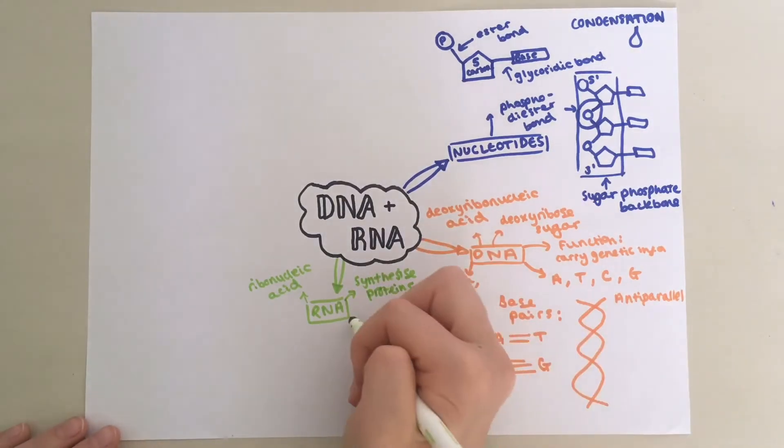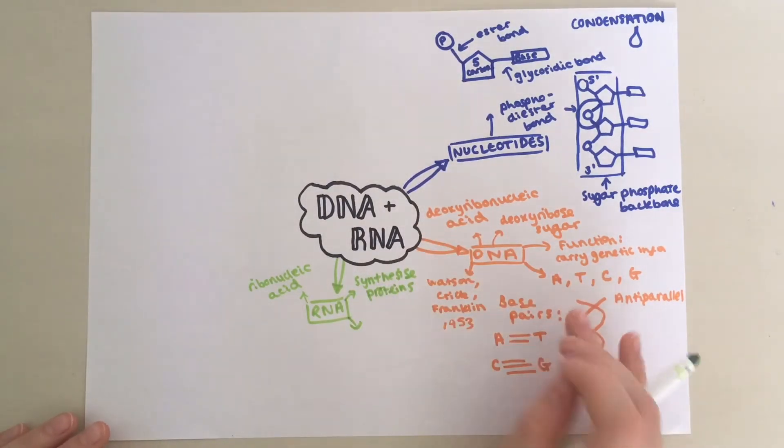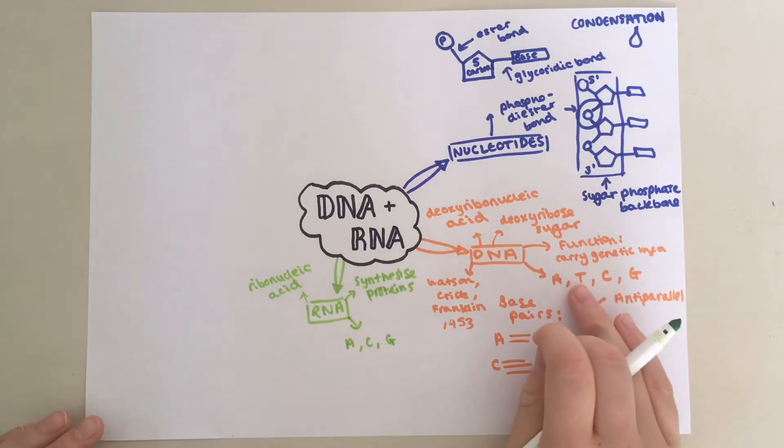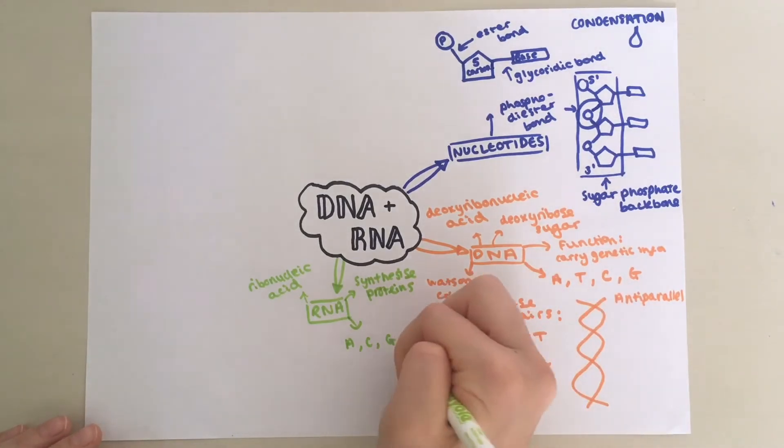The bases in RNA are very similar to that of DNA, however there is one difference. So you still have adenine, cytosine and guanine. However, instead of thymine, in RNA you have U, uracil.